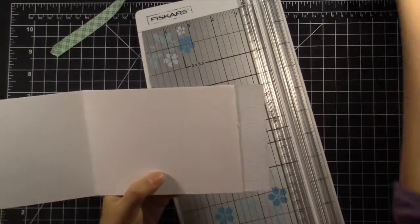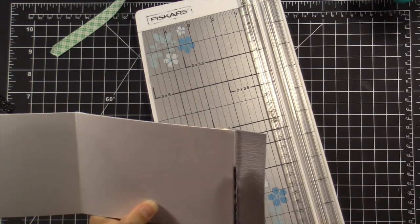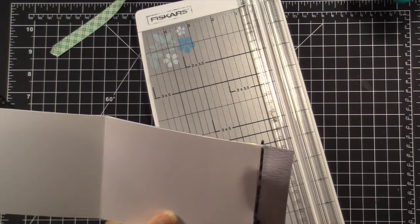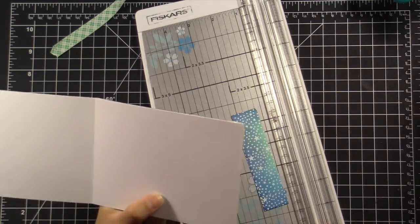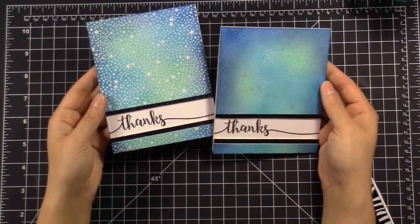And I just followed my card base and used my scissors to go ahead and trim it. And so I did this with all of the cards, and here I'm just showing you the two, one with the white embossing powder and the other one with the silver pearl.